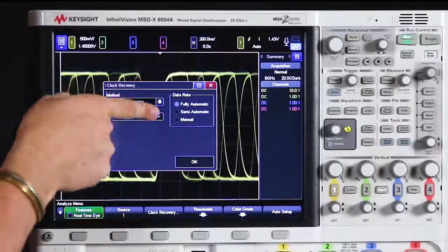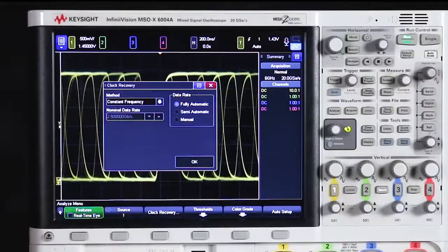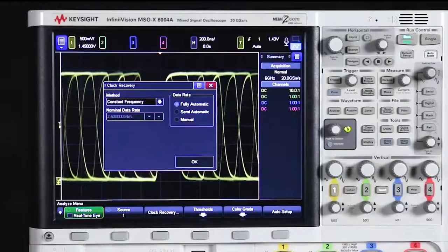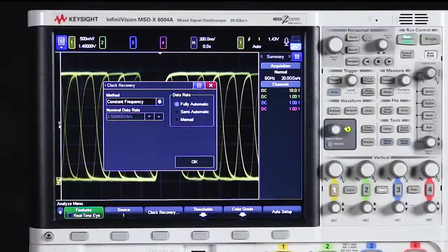And in here we can see the different data rate options that we have. So there's fully automatic, which you would want to use in the case that you have no idea what the bitrate of the signal that you're working with is. And you want the scope to completely calculate that exact ideal bitrate for you.